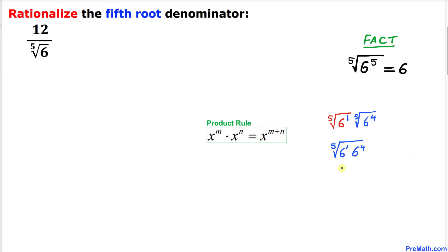So therefore we can write this as the fifth root of 6 to the power 5. Now our exponent is 5 and the index is 5, so we're going to use this fact: they undo each other, so we simply end up with 6.